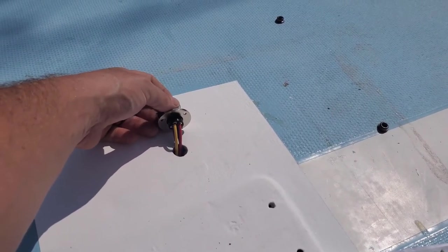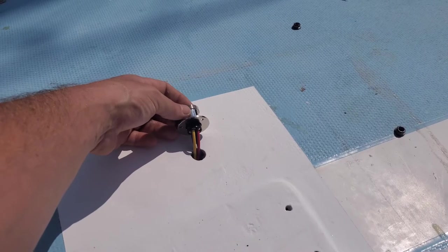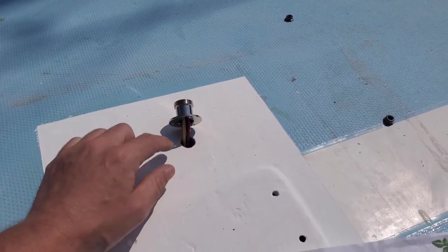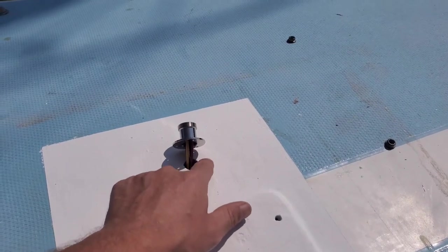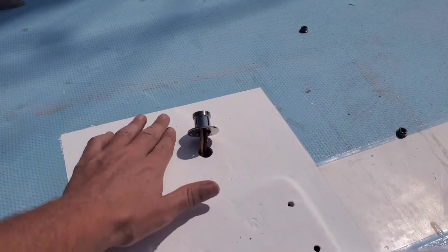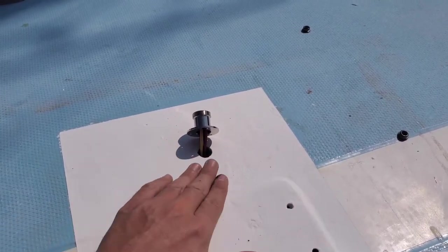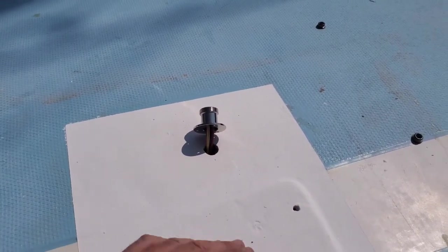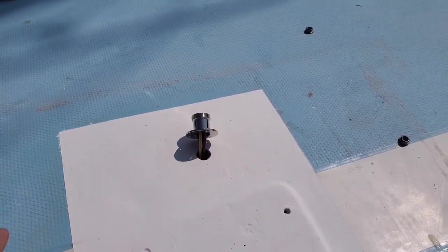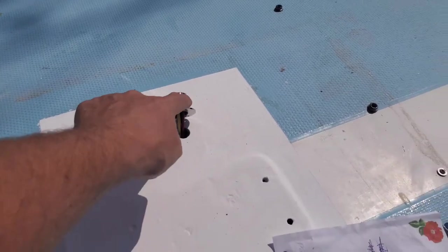I'll seal it all up with some 3M 4000 UV. I don't have to pre-fill the holes with epoxy and then drill them again because this is all basically epoxy and new fiberglass here, so it's not gonna get into the core. When we started, the hole was huge.